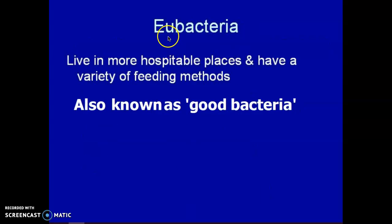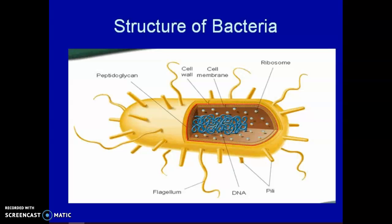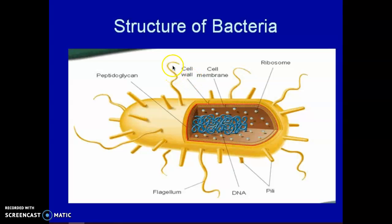The Eubacteria — 'eu' is the prefix that means good. I don't mean these bacteria are necessarily good for you; I just mean they live in more hospitable, normal places. The structure of a bacteria is pretty basic. Here's the DNA — notice it is not in a membrane-bound nucleus. These pearl-looking things are ribosomes, which make proteins. This one has a membrane, a wall, and pointy pili on the outside for protection. This one has flagella, which help it swim.